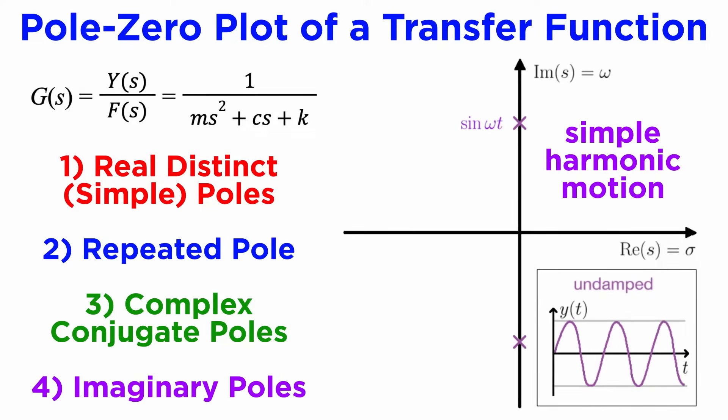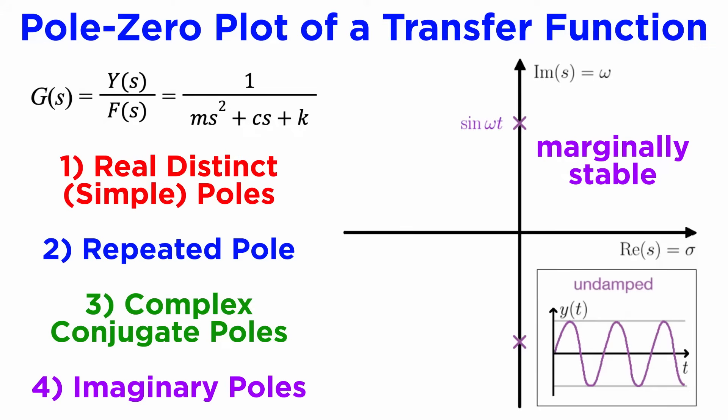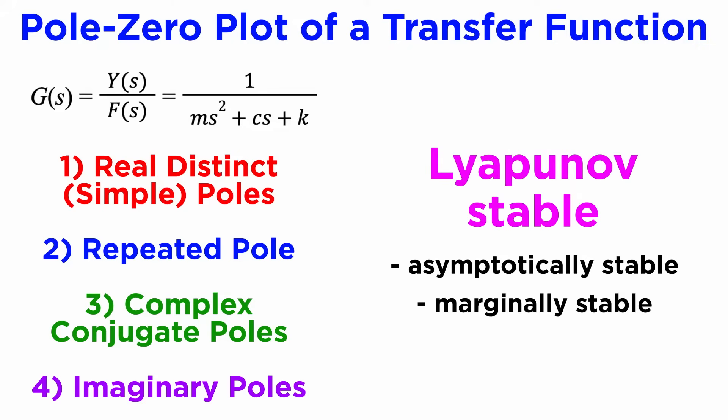If the poles lie on the imaginary axis, then we get a completely undamped system which exhibits simple harmonic motion. In this case, we say that the system is marginally stable, which is the edge case between asymptotically stable and unstable, where the output neither grows nor shrinks with time, instead maintaining a steady value or amplitude.